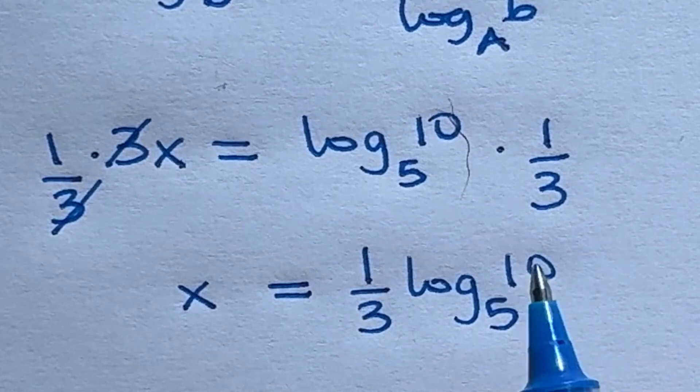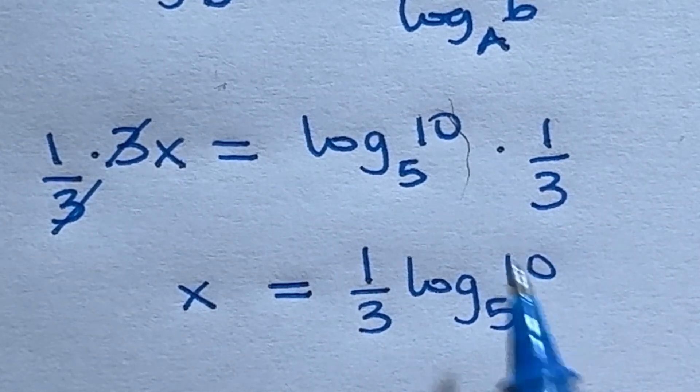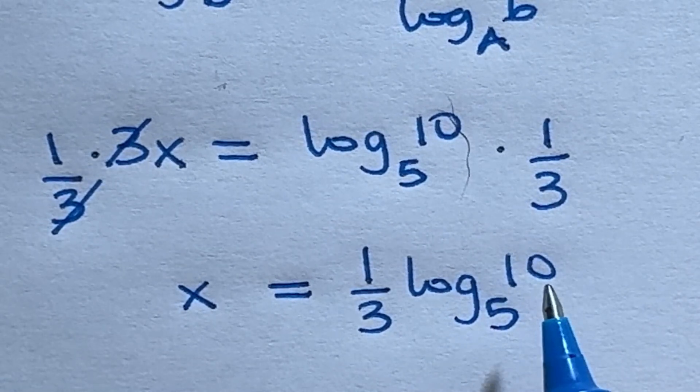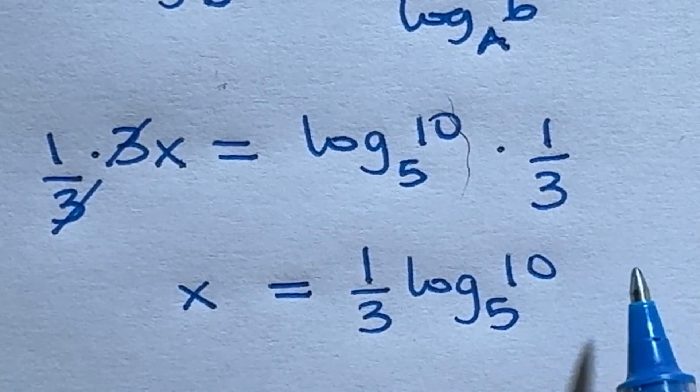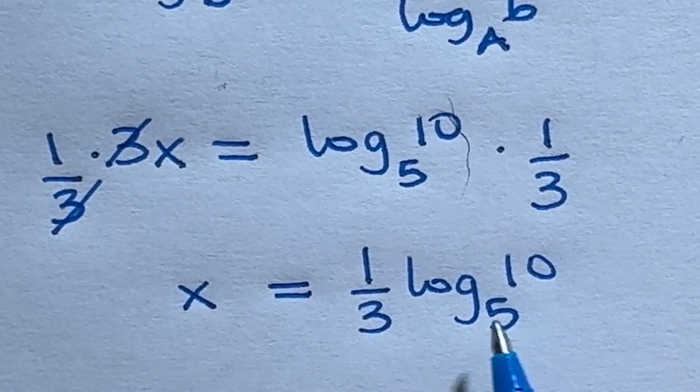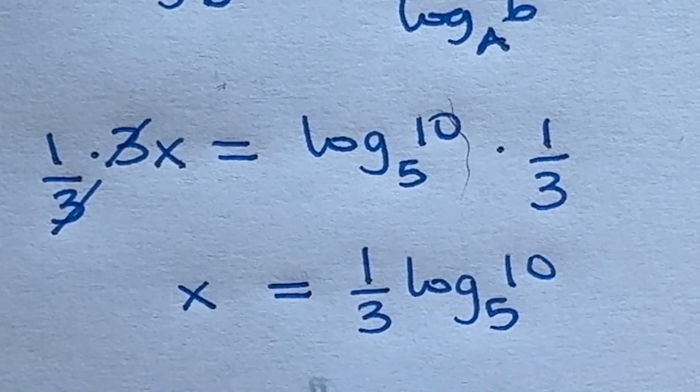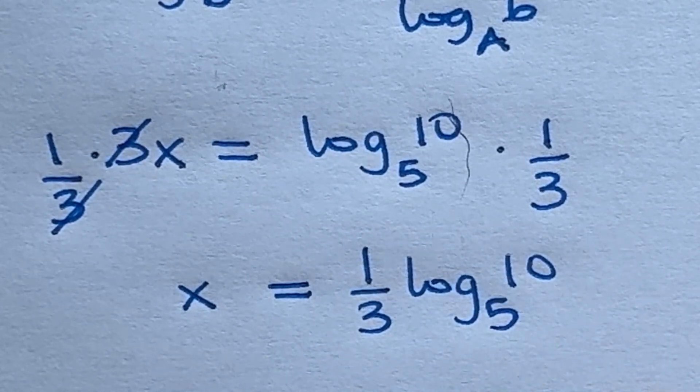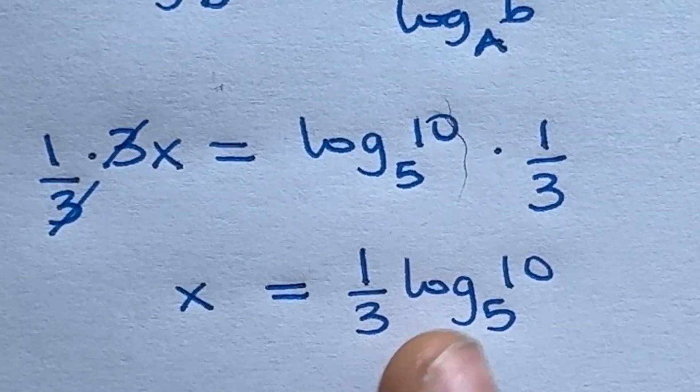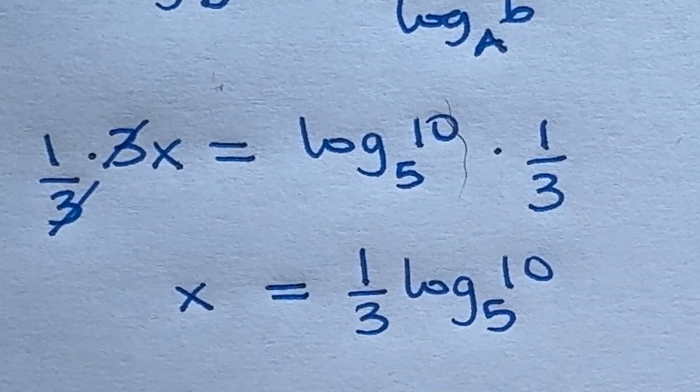And we can still break down 10 itself, if we want, to 5 times 2, and then separate by logarithm. But we can leave our final answer here as x is equal to log 10 base 5 all over 3.